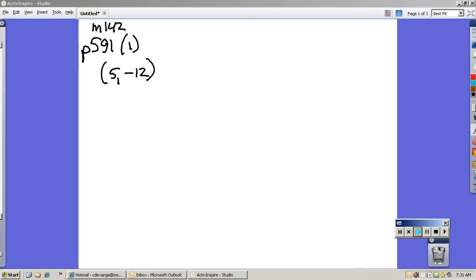This is Math 142. This is a homework problem on page 591 out of the Precalculus with Limits Unit Circle Approach, and this is problem number one. The question tells you that you have an angle.